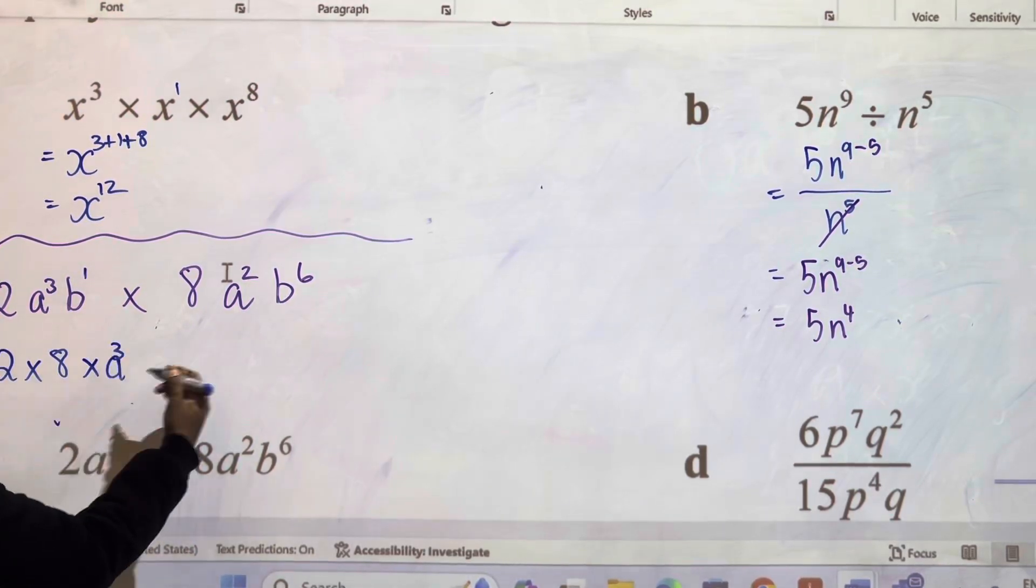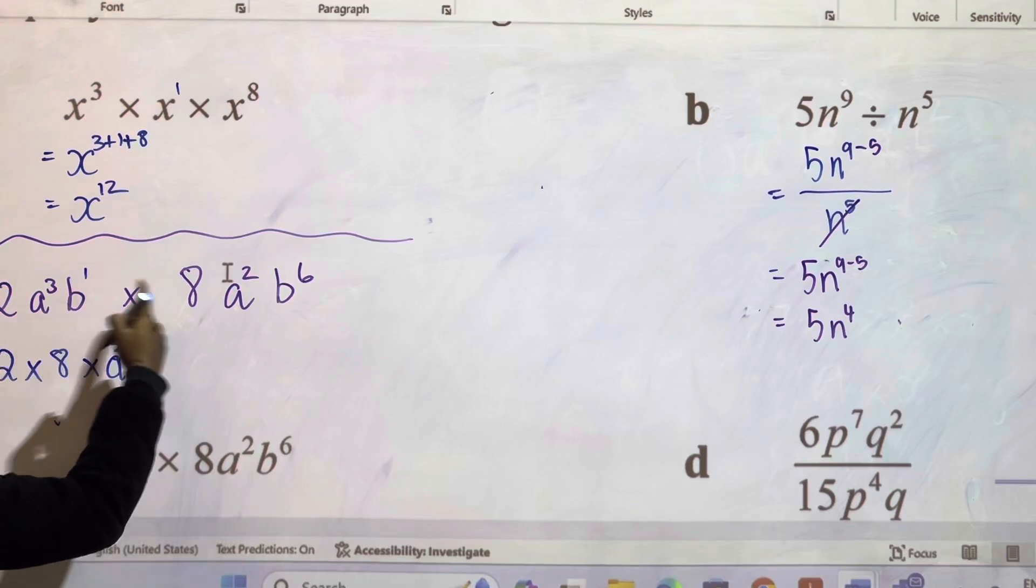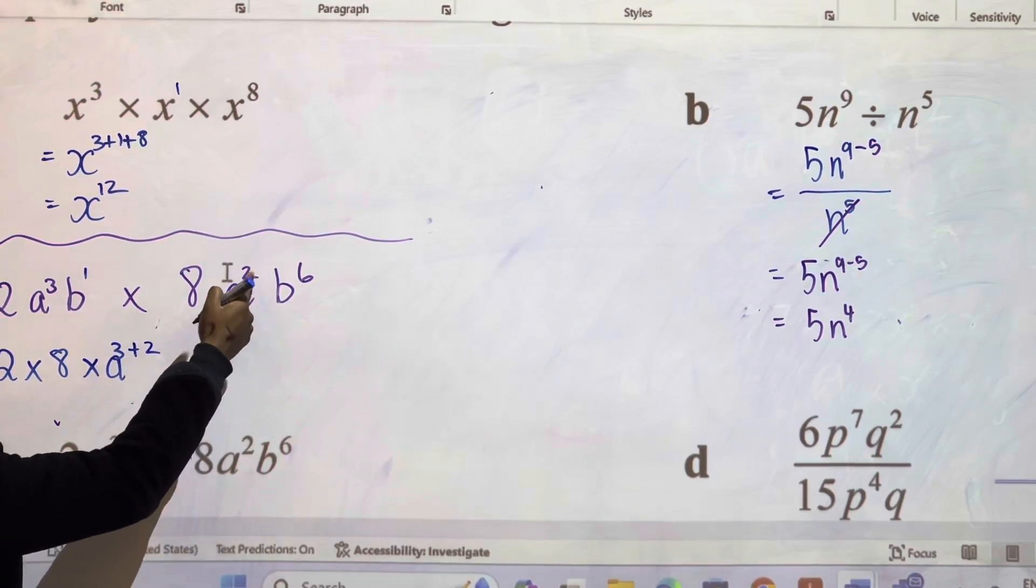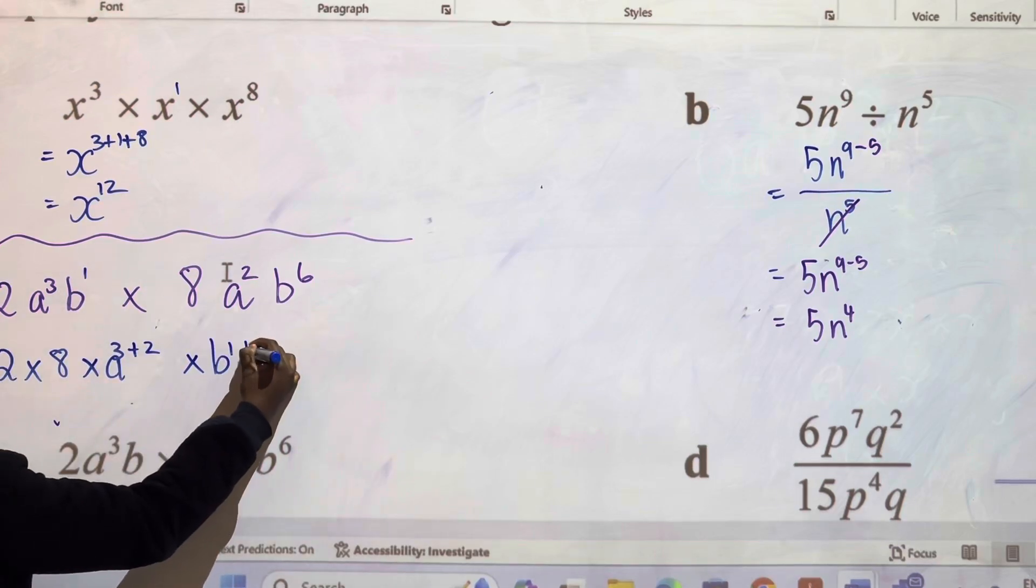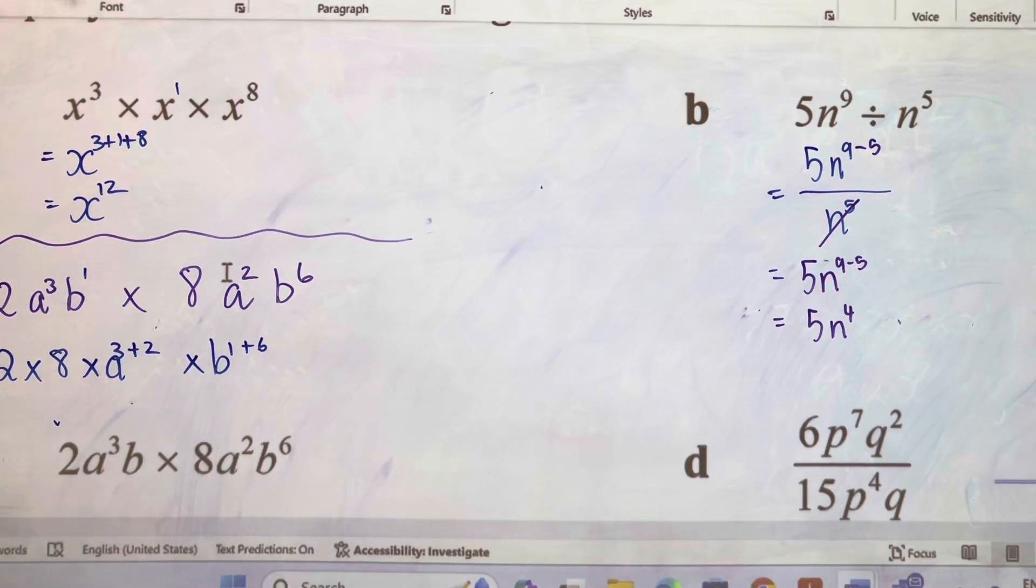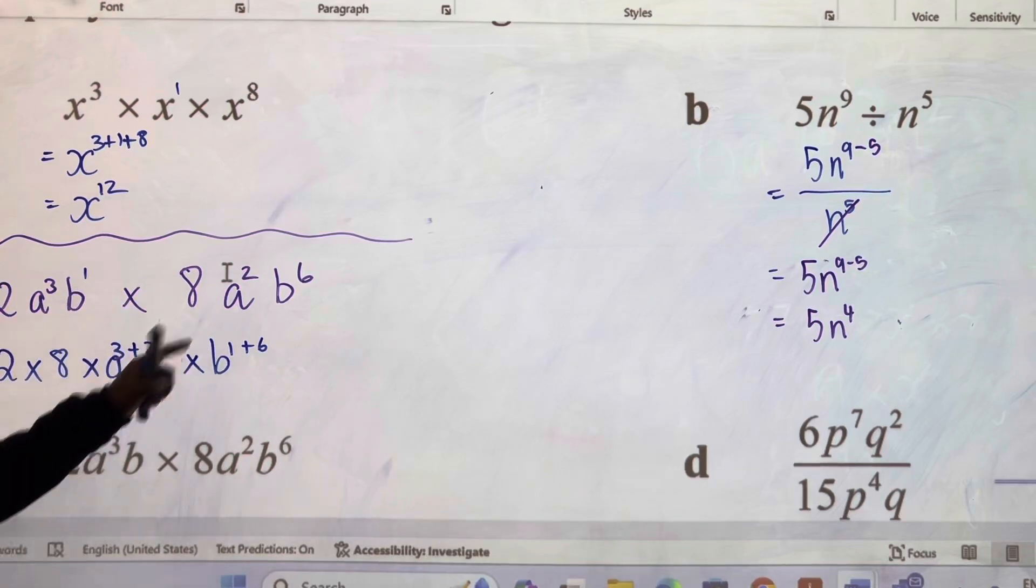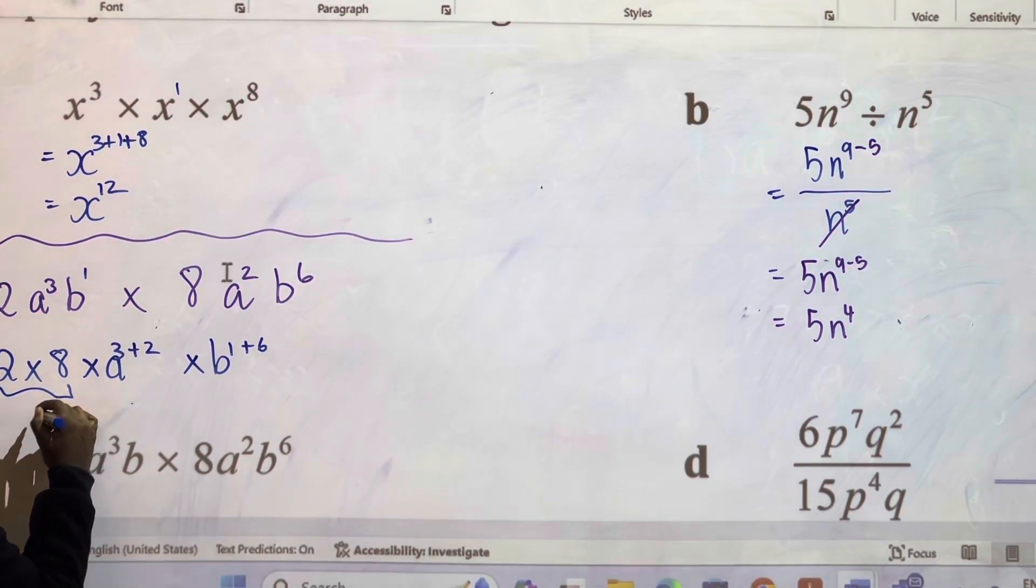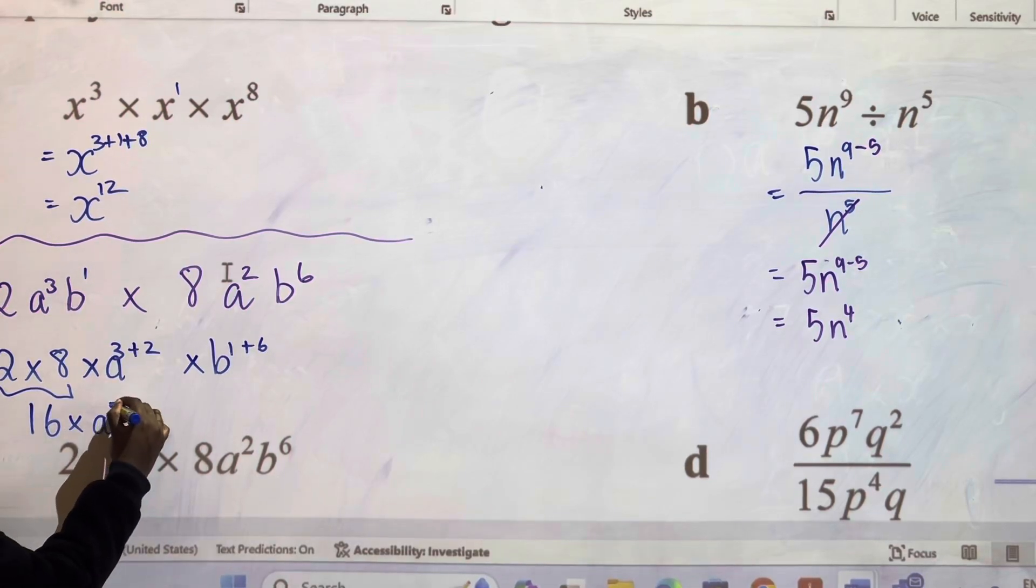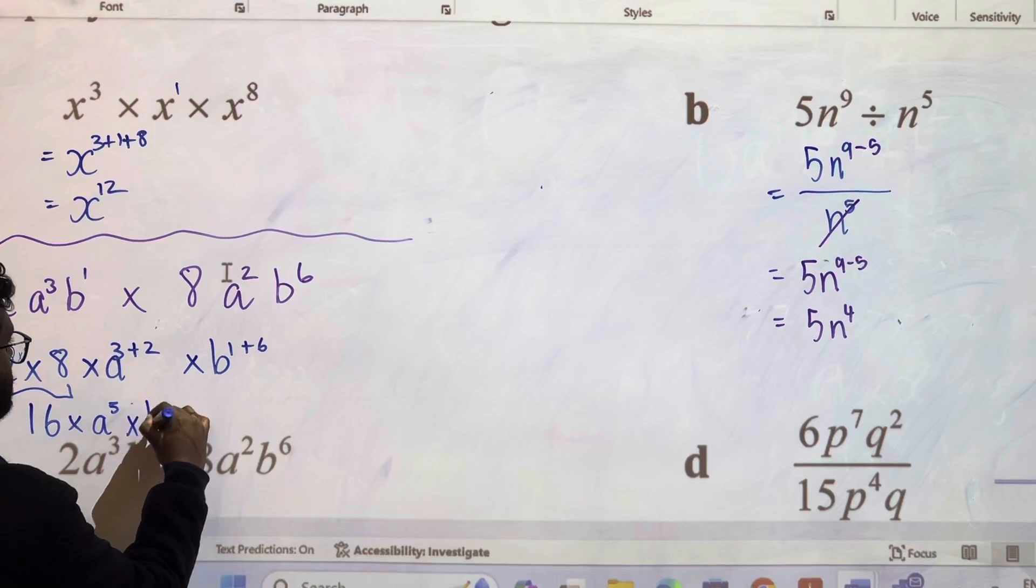Then we're going to go times a to the power of 3. I'm going to put a 1 there. a to the power of 3 plus this 2, then times b to the power of 1 plus this 6. Why am I adding them? Because they have the same base. a to the power of 3 and a to the power of 2. Then you're going to go 2 times 8.